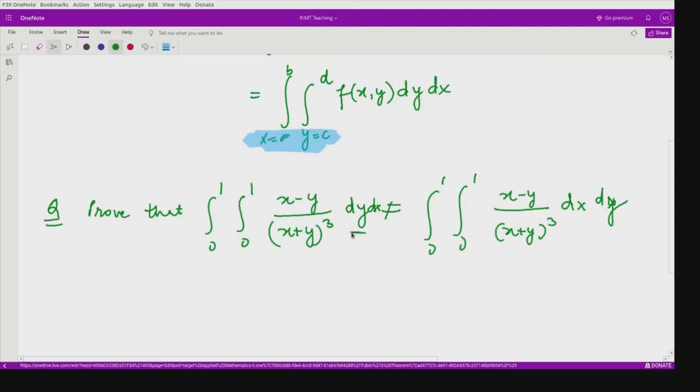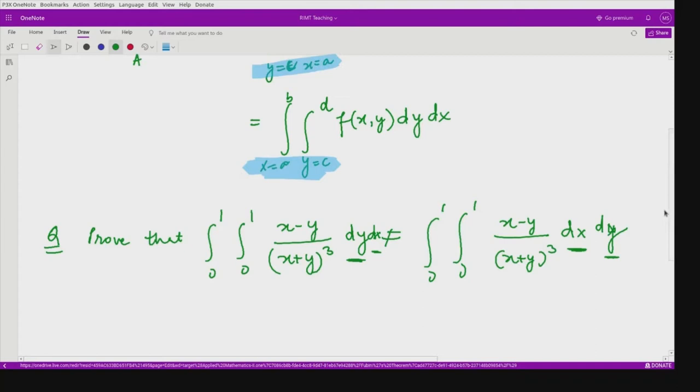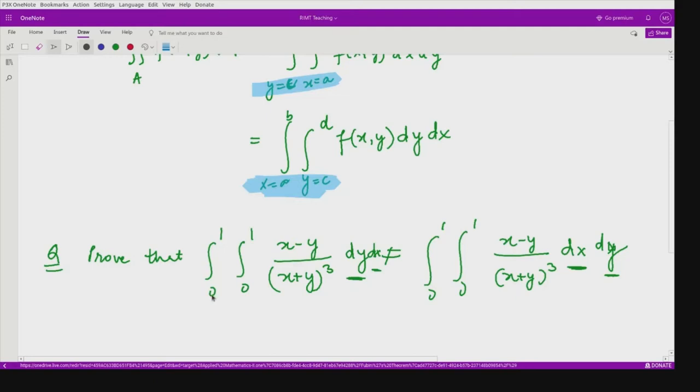You see even if you interchange the limits, in this case we are interchanging - we are firstly doing the integration with respect to y and then with respect to x. Here we are doing it with respect to x and then with respect to y. These are not equal but according to Fubini's result, it should be. Fubini's result says that whenever you are given this rectangular region, here the limits are from 0 to 1 and 0 to 1, that means the region is given to be rectangular. There is no doubt in that.